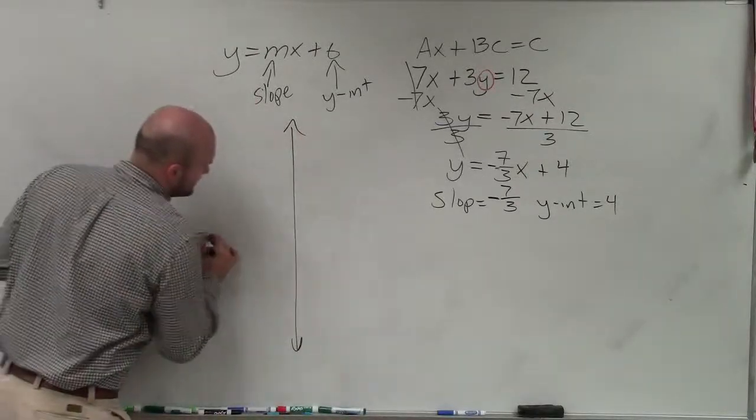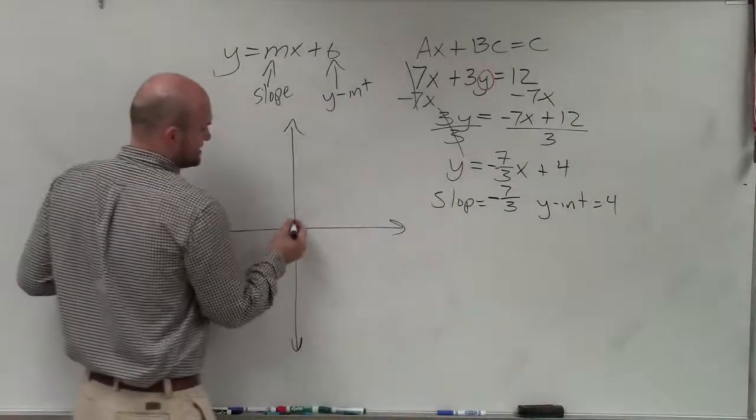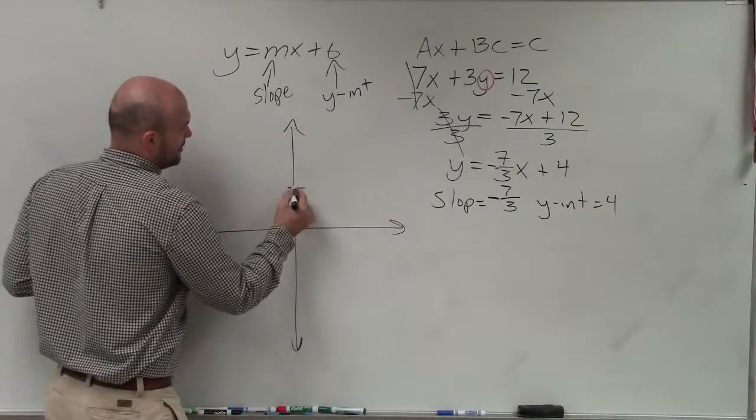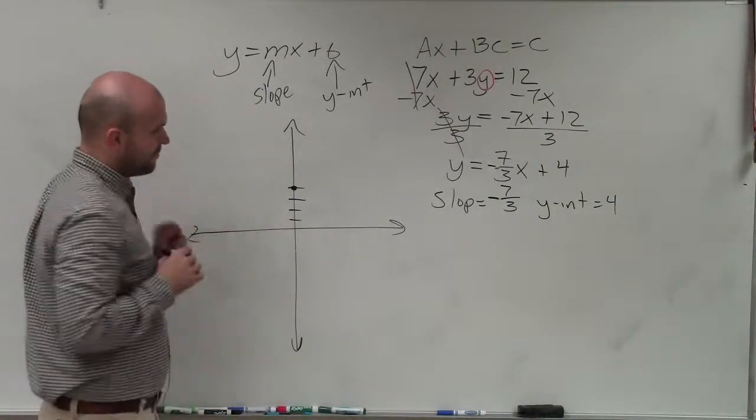So when we're setting to graph this, the first thing we always want to do is graph the y-intercept, which in this case is at 4. 1, 2, 3, 4. So then I go ahead and graph my y-intercept, which is at 4.